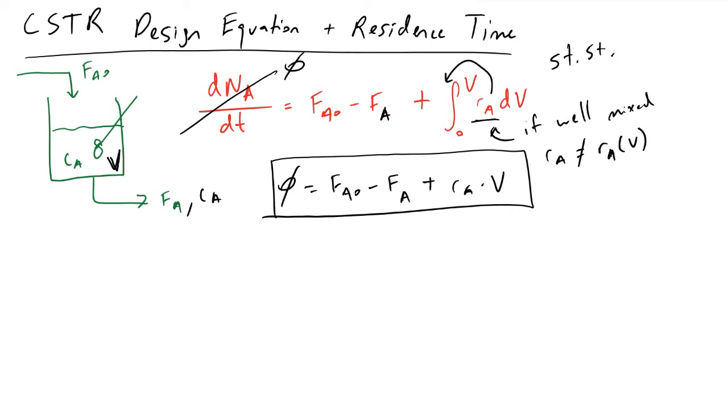And so the next thing we're going to make use of here is that what we really care about is looking at how the rate of our reaction, or the volume that we're going to need inside our reactor, is dependent on the other parameters that we have present. And so the point we get to is how big of a CSTR is needed.